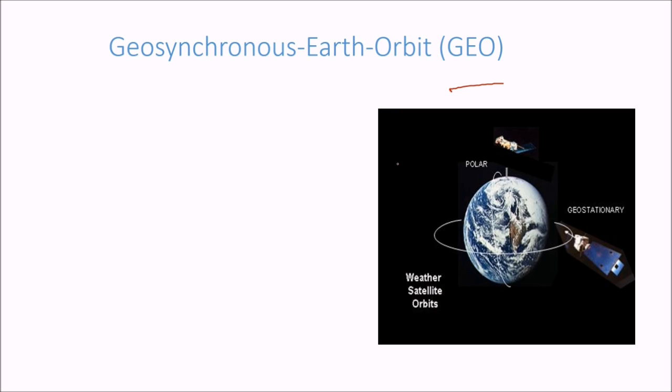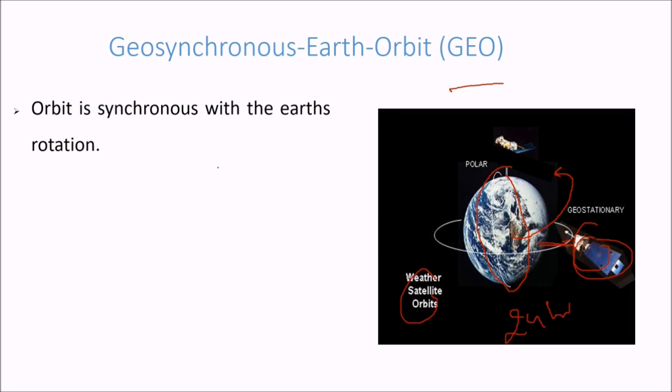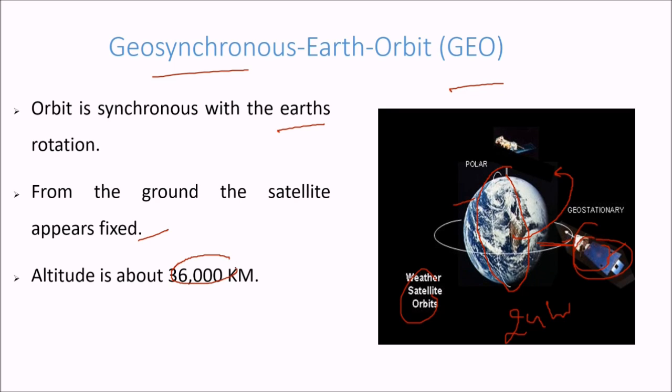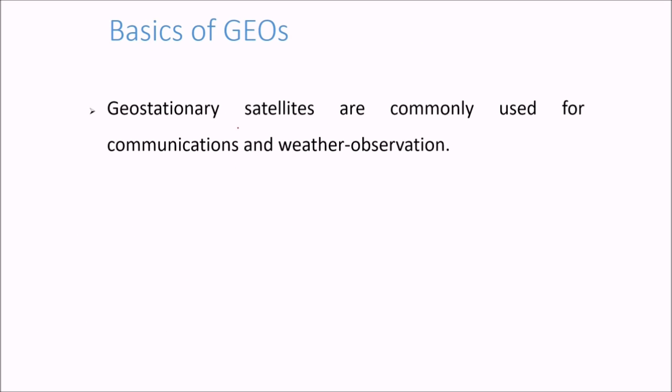Now we come to GEO, geosynchronous earth orbit. Geosynchronous, these were the polar satellites. We have geostationary here which is at the equator, always seemingly stationary to the earth because earth also revolves around its axis. That is 24 hours it takes, and the same time this satellite takes. So orbit is synchronous with the earth rotation, that is why it is called geosynchronous. From the ground the satellite appears fixed, though they both are moving. Earth is also moving and the satellite is also moving, but it still appears to be fixed. The altitude is around 36,000 km. The coverage, 40% of the planet per satellite.